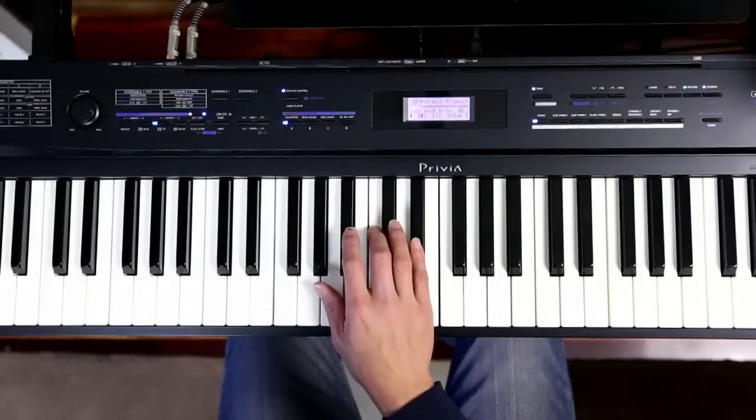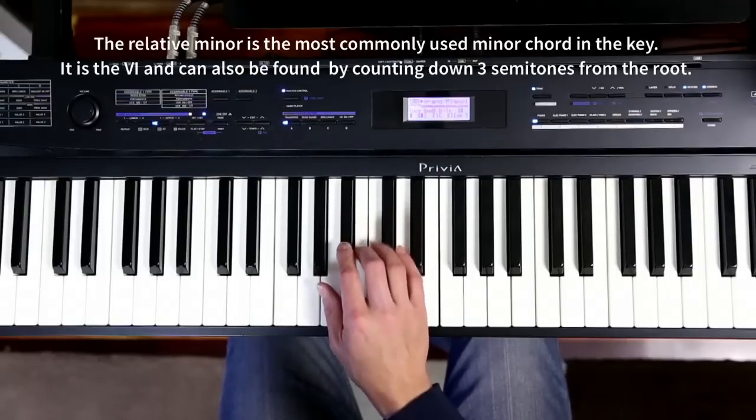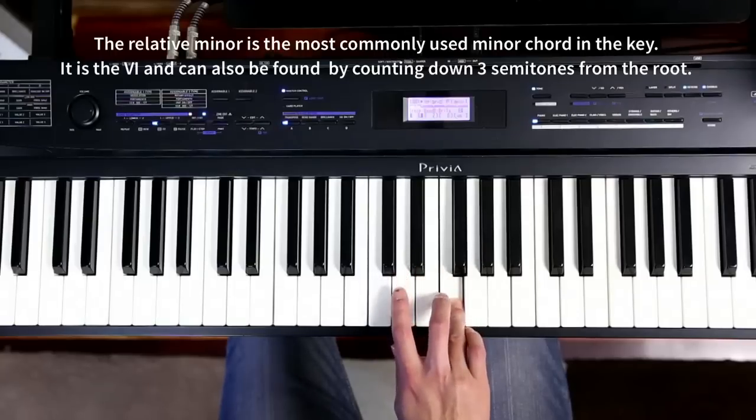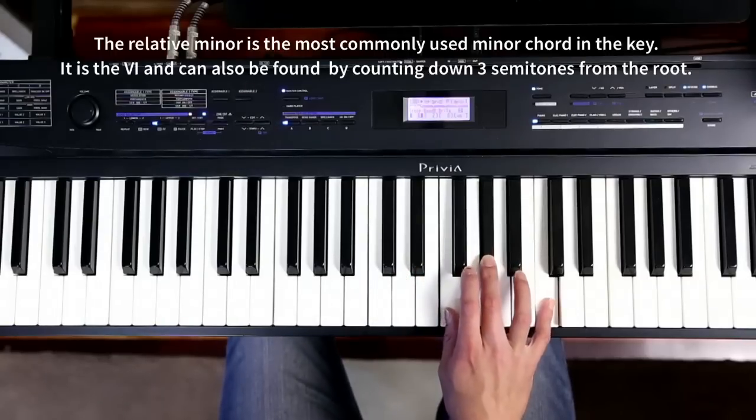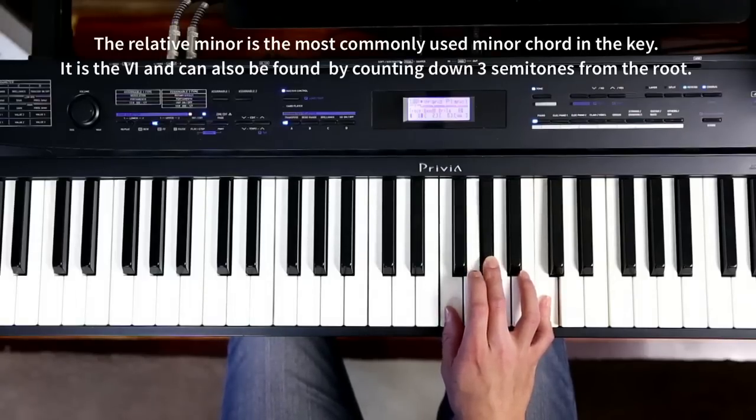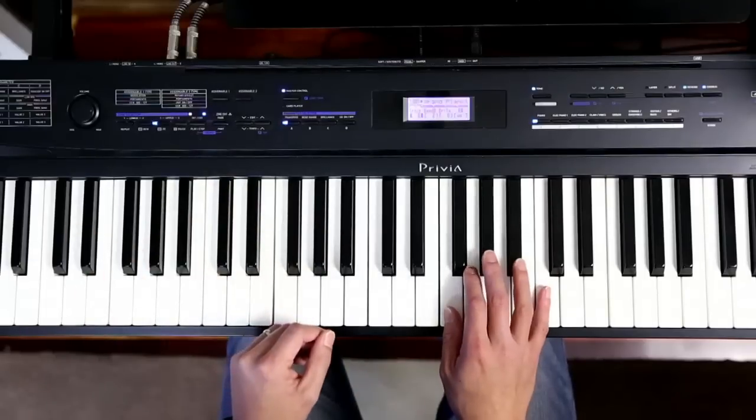Now, the minor chord that we're going to use in our progression is the relative minor of the key, which is the sixth: one, two, three, four, five, six, which is the F minor. It's called the relative minor. It's related to the key. It's the most commonly used minor chord in the key of A flat. F minor. Okay, so let's head on to our progression.